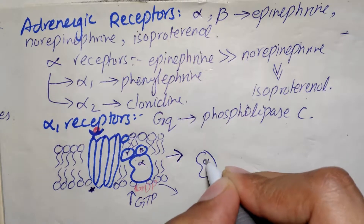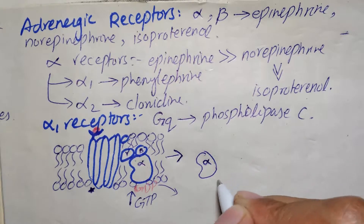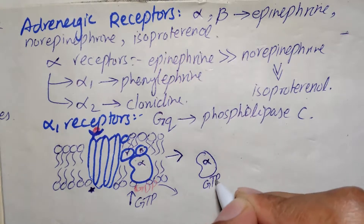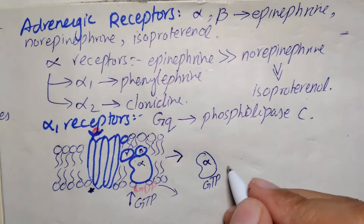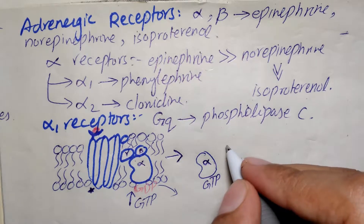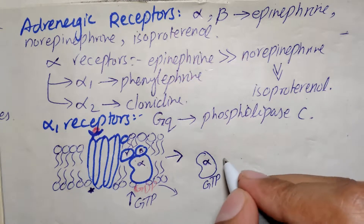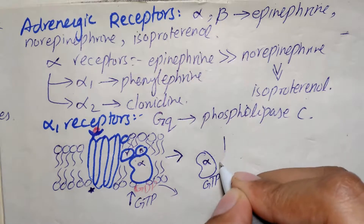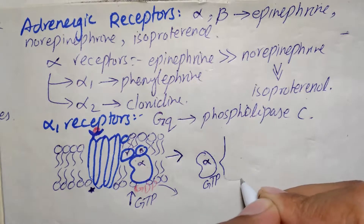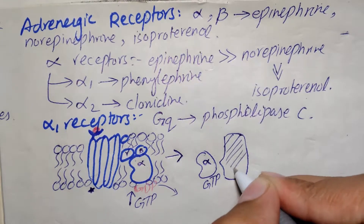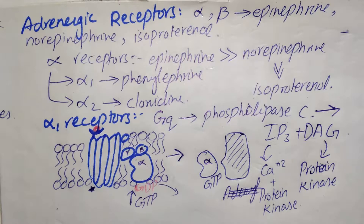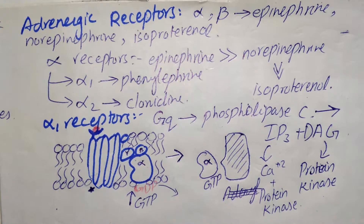The alpha subunit moves along with the attached GTP, while beta and gamma stay in place. The separated alpha subunit then binds to an enzyme — in the case of alpha 1 receptors, that enzyme is phospholipase C.